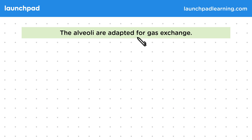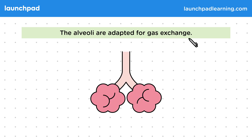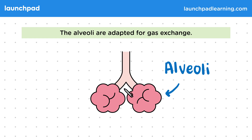The alveoli are adapted for gas exchange. In this diagram you can see the alveoli. At the end of the branches in your lungs there are millions of tiny alveoli.